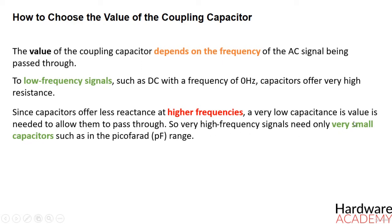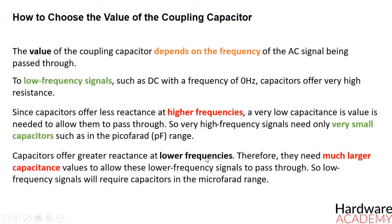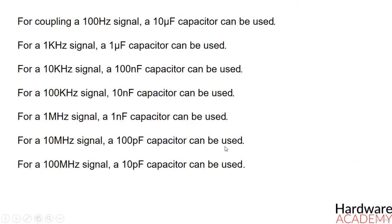Very high frequency signals need only very small capacitors such as in the picofarad range. Capacitors offer greater reactance at lower frequencies, and therefore they need a much larger capacitance value to allow these low frequency signals to pass through. So low frequency signals will require capacitors in the microfarad range. Coupling capacitors are used in many different applications. One of the most common applications is for amplifiers. However, they can be used in practically any circuit that requires DC blocking with AC coupling, such as radio frequency applications. Since audio frequency and radio frequency applications cover a wide range of frequencies from hertz all the way to megahertz, this covers all the frequencies that are necessary for coupling applications.